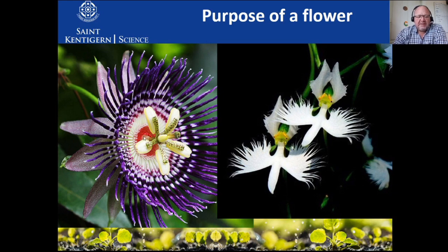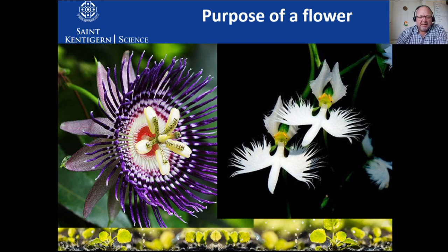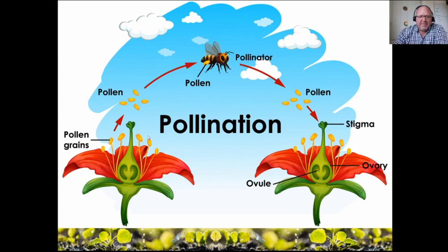The only reason flowers look so pretty is to attract pollinators. The reason why they give away nectar is to attract pollinators - they want the pollinator to go deep into the area where the nectar is. The pollinator gets covered in pollen, and then when they fly to the next flower they deposit it on the sticky stigma.